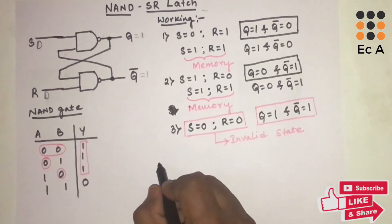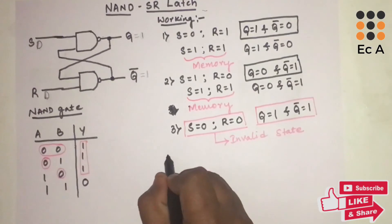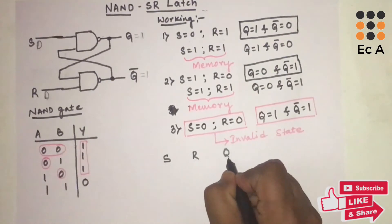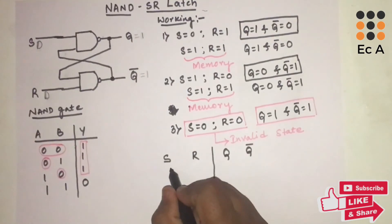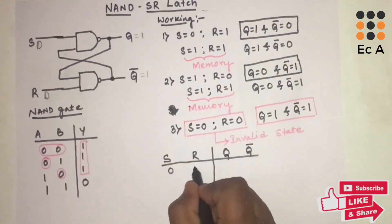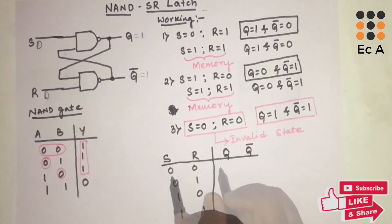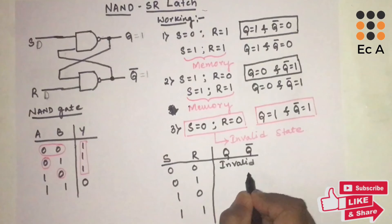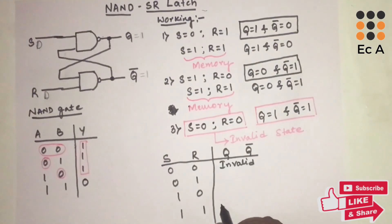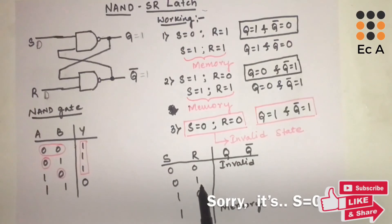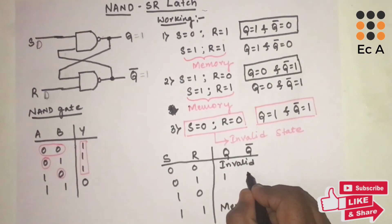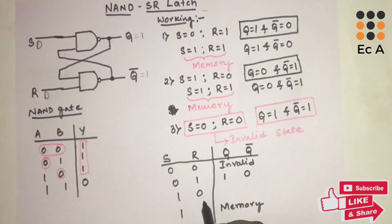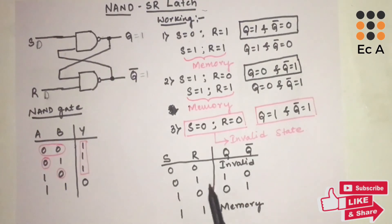Now let us write the truth table for the NAND SR latch. The inputs are S and R, and the outputs are Q and Q̄. The four combinations are: S=0, R=0 → invalid state; S=0, R=1 → Q=1, Q̄=0; S=1, R=0 → Q=0, Q̄=1; S=1, R=1 → memory state.